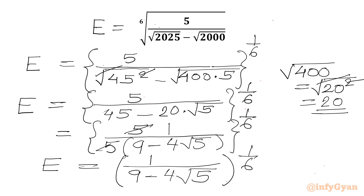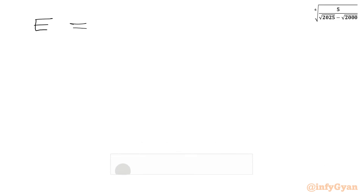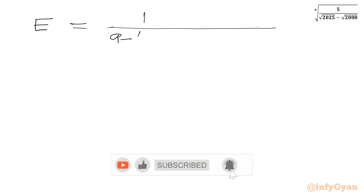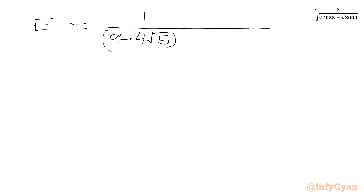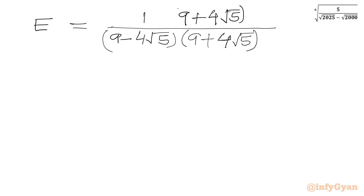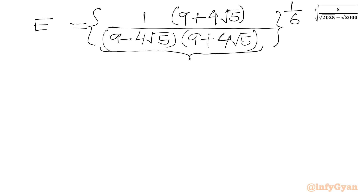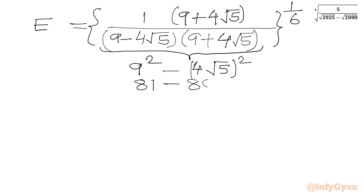Now we can rationalize our denominator. We multiply numerator and denominator by the conjugate of the denominator, which is 9 plus 4 root 5. The denominator forms a difference of two squares: 9 squared minus (4 root 5) squared, equal to 81 minus 16 times 5, which is 81 minus 80, giving 1. So our denominator becomes 1.